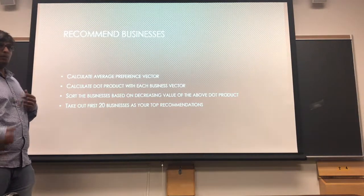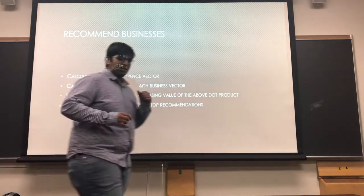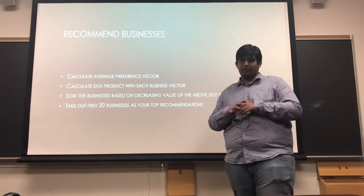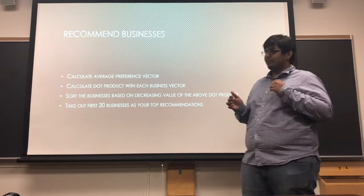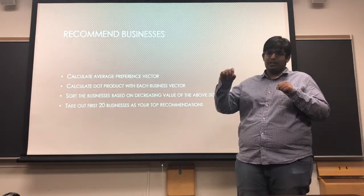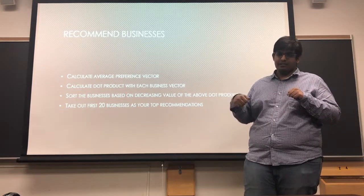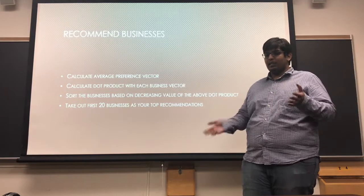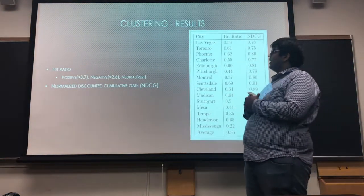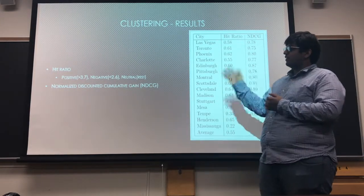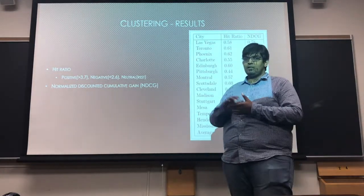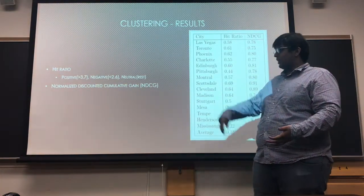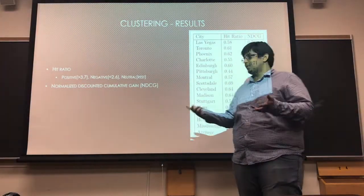My name is Varun. After clustering users, we build an average preference vector of the cluster. We then take that average preference vector and calculate the dot product with each business vector created earlier. If the dot product is higher, it means it is more similar, so we recommend that business at the top of the list. In this way we get the top 20 businesses for the average preference vector. For clustering results, we use two approaches: hit ratio and NDCG, that is normalized discounted cumulative gain. Hit ratio tells us if a user visited a business whether they liked it or not, and NDCG tells us how well they liked it.